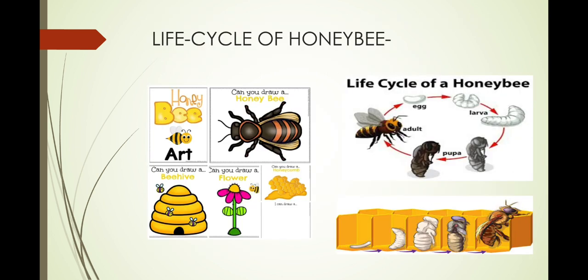The life cycle of a honeybee has four stages: egg, larva, pupa and adult.